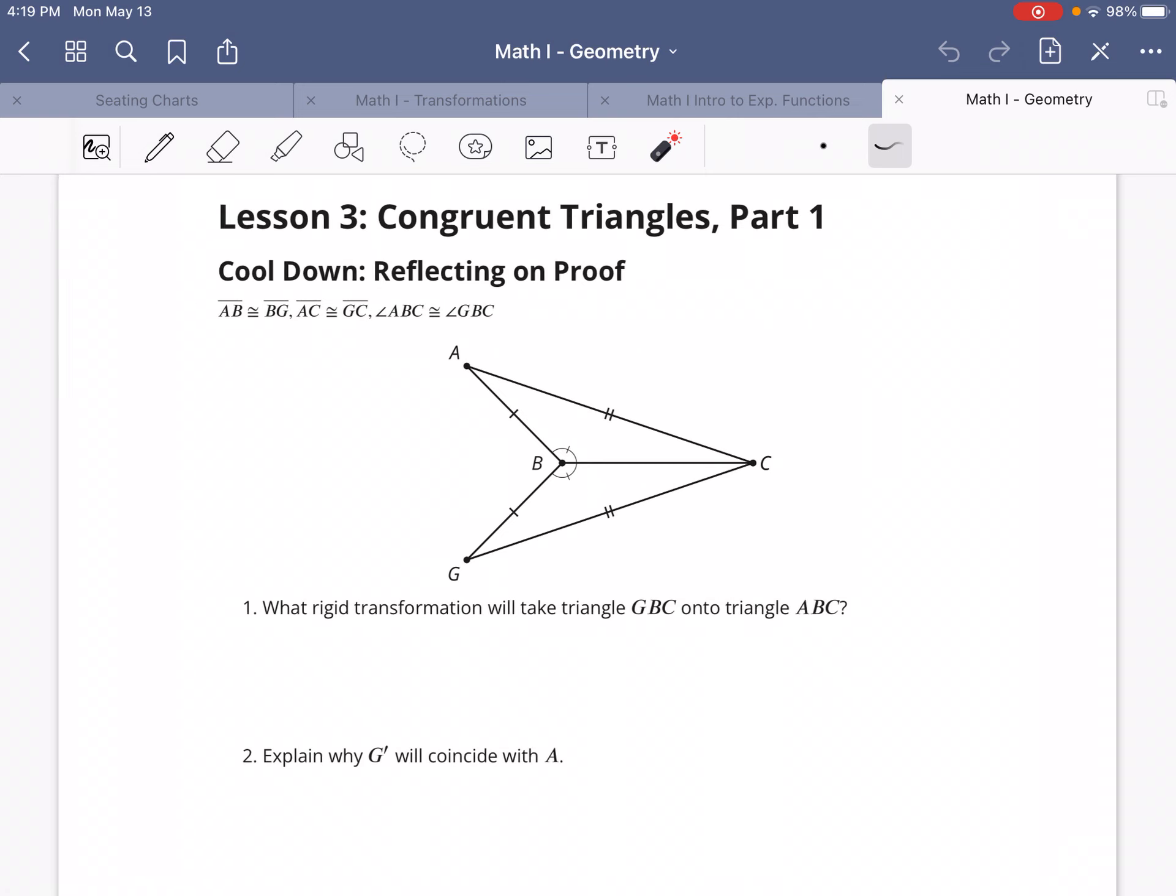So the question is, what rigid transformation - rotation, translation, reflection across the line - what rigid transformation will take GBC onto triangle ABC?